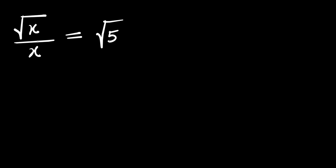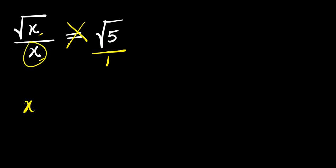We have this radical problem: square root of x divided by x equals square root of 5. We are solving for all values of x that satisfy this equation. We are going to cross multiply, so x will multiply square root of 5 — we have x times root 5 — and this equals root x times 1, we have root x.